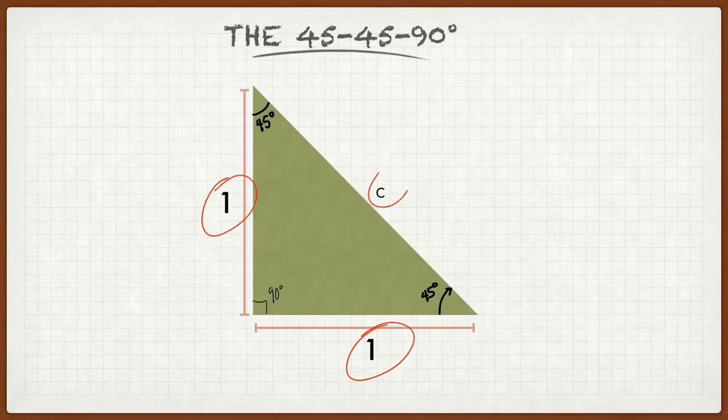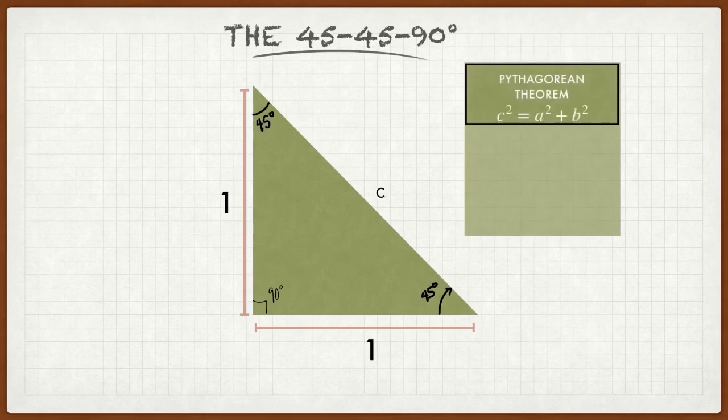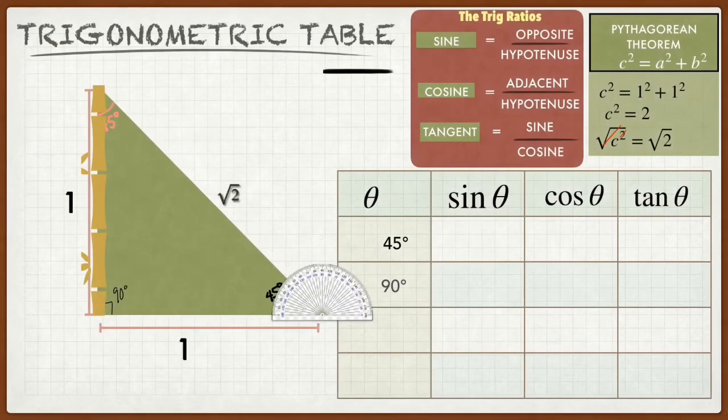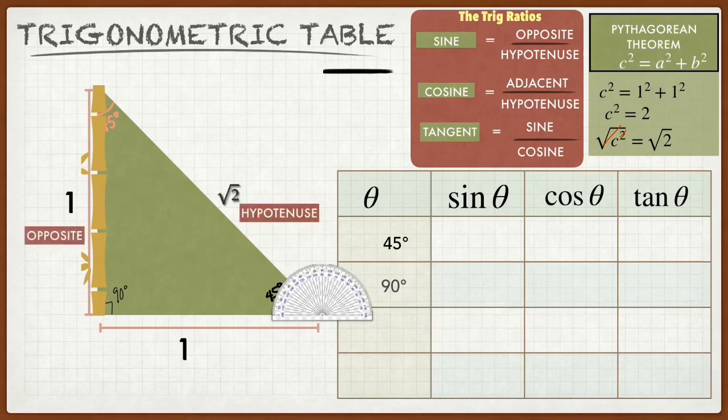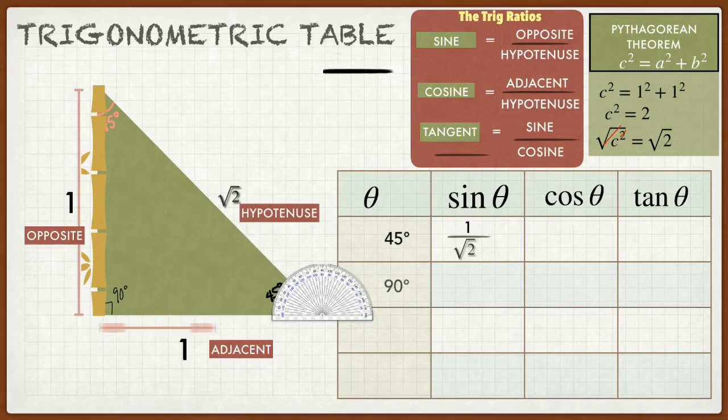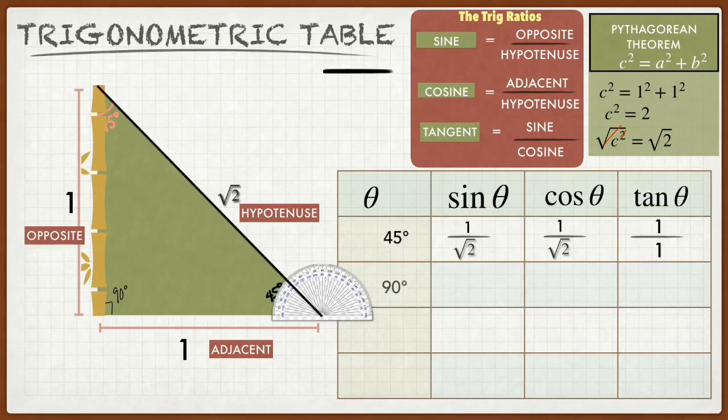Now that we know that two sides of the triangle are one, we can use the Pythagorean theorem to solve for the unknown side. By using c squared equals one squared plus one squared, one squared plus one squared equals two. So if we take the square root we get c equals square root of two. Let us imagine that this triangle is a protractor trying to measure the height of a bamboo tree. We can find the trigonometric table by first labeling the triangle. And then using the trigonometric ratio, we can solve the sine, the cosine and the tangent. Sine is opposite over hypotenuse. Cosine is adjacent over hypotenuse and tangent is sine over cosine.